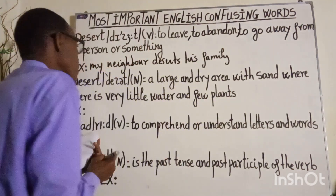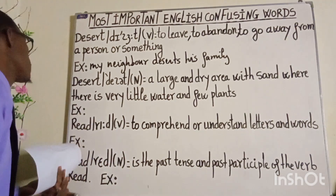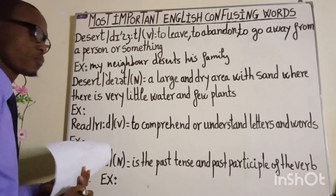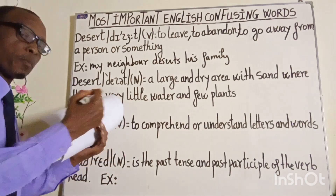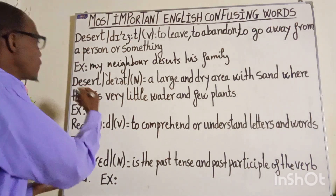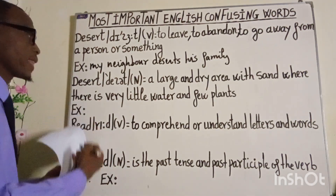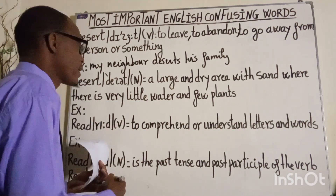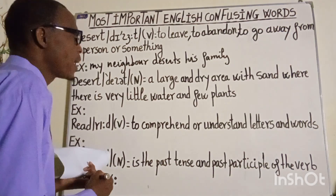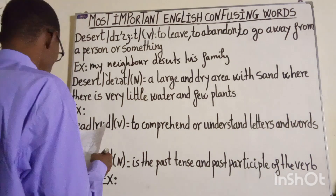Moving on to the second word, which is also spelled D-E-S-E-R-T. It is pronounced as 'desert' — repeat after me: desert. And it is a noun. It means a large and dry area with sand where there is very little water and few plants. Let's get an example for it.